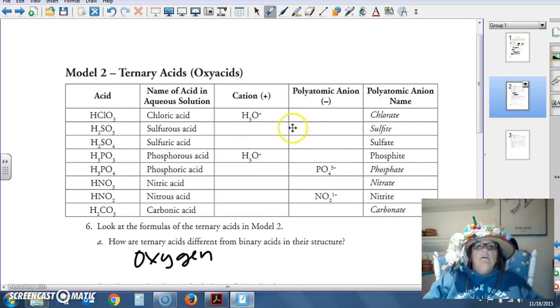Chloric acid. What's our polyatomic ion? ClO3, which is chlorate. Sulfurous acid. What's our polyatomic ion? SO3, which is sulfite. What are we bonding to? Our cation is H3O, the hydrogen, and we have two of them.